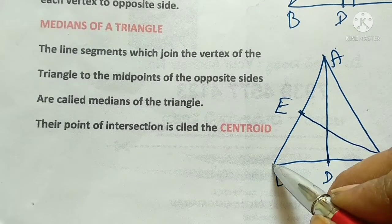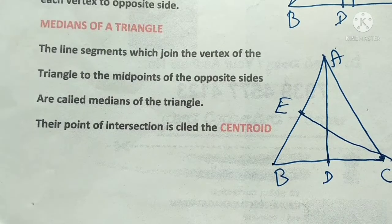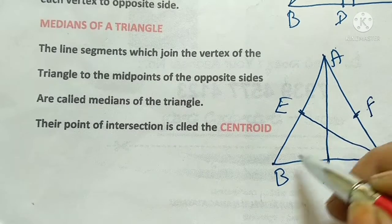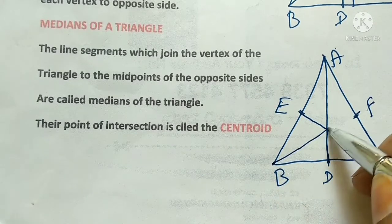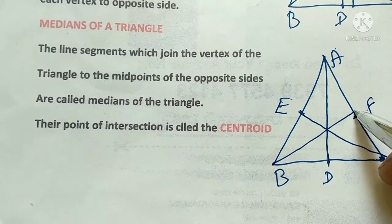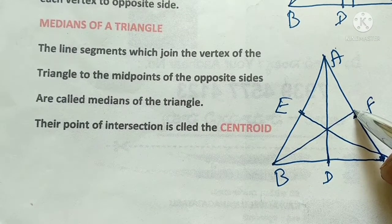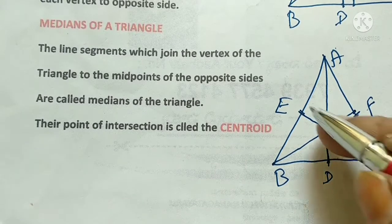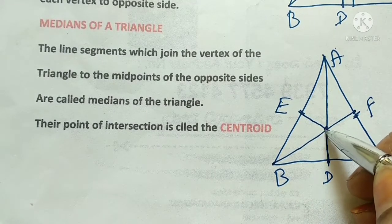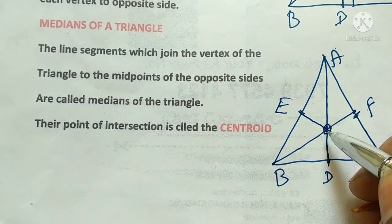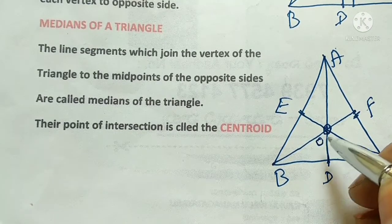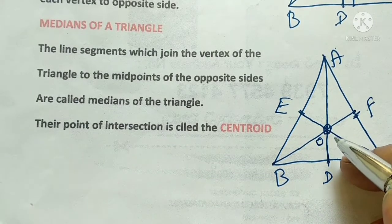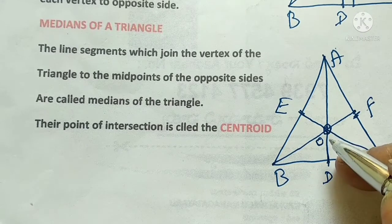Vertex B joins to midpoint F of opposite side AC — BF is the median. We have three medians: AD, BF, and CE. These three medians intersect at one point. The point of intersection of the medians is the centroid — this is the main point of the triangle. We will continue in the next class.